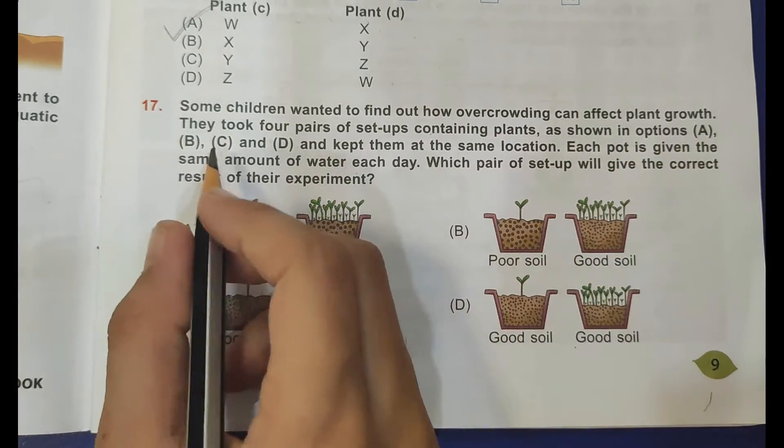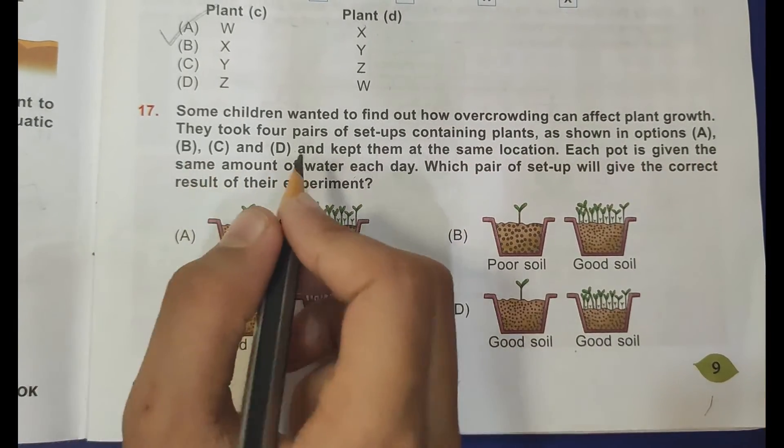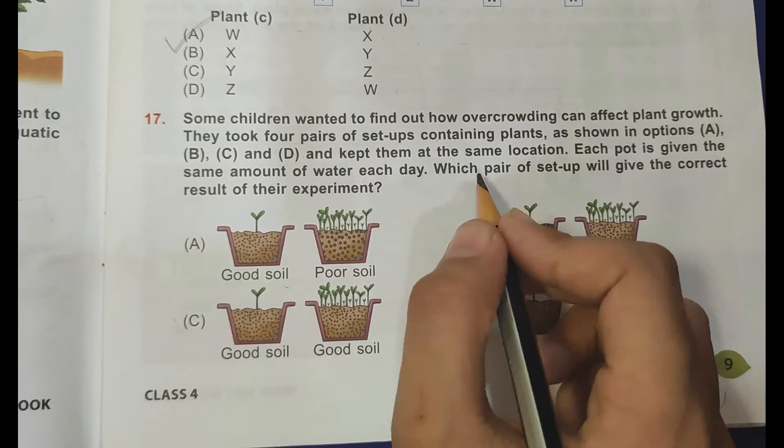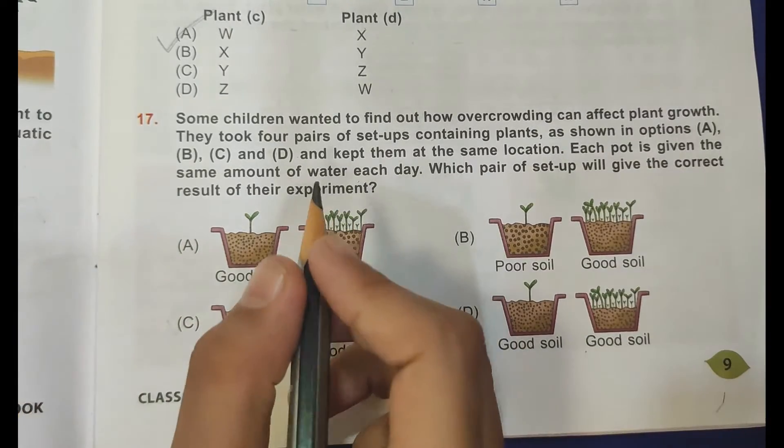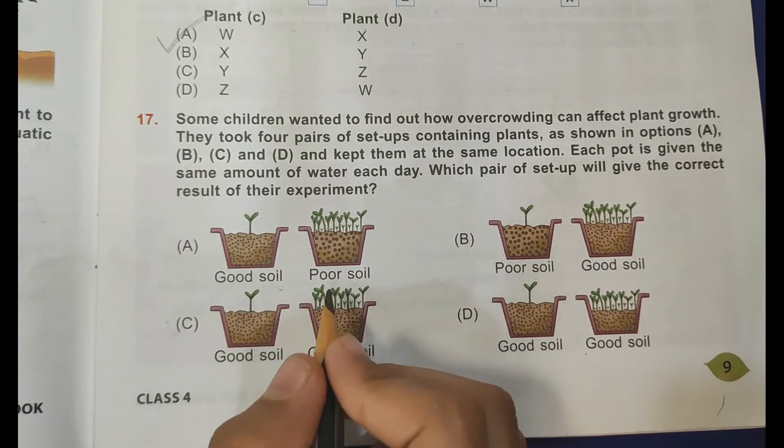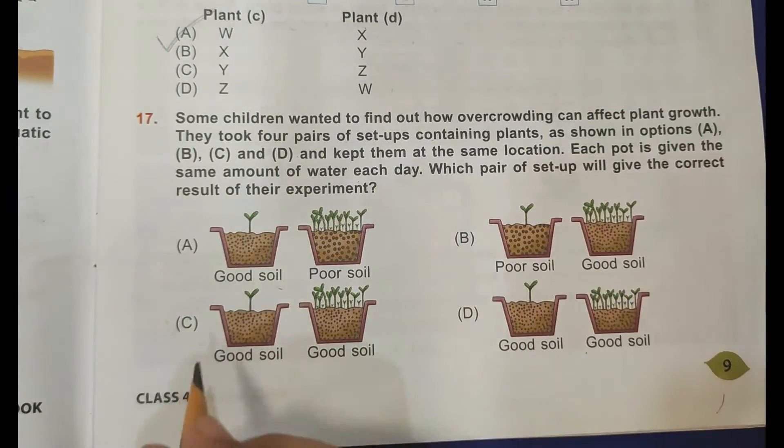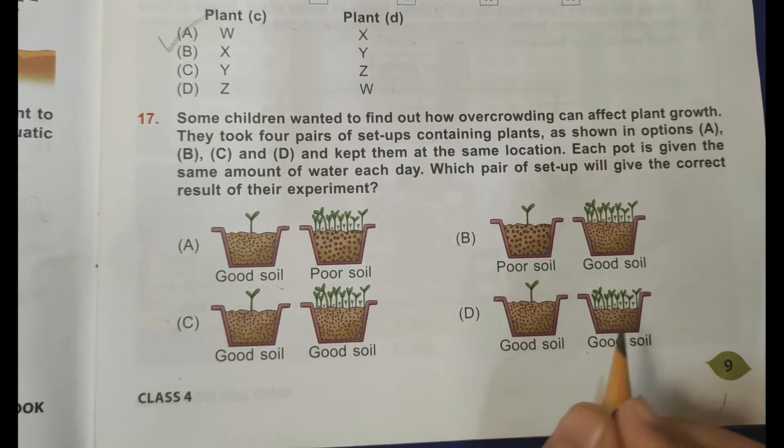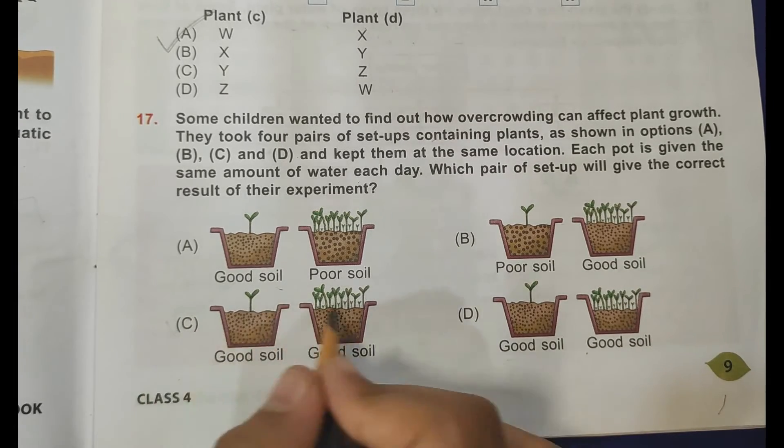Children wanted to find out how overcrowding can affect plant growth. They took four pairs of setups containing plants as shown in options A, B, C, and D and kept them at the same location. Each pot is given the same amount of water each day. Which pair of setup will give the correct result of their experiment? For the correct result of experiment, they need to use both good soils. Here is good soil and here is poor soil, so it is incorrect. Here is poor soil and here is good soil, so that is incorrect. Option C, both are good soils. Option D, they both are good soils but in option D there is less amount of good soil in this pot and here is equal amount of soil. So C is the correct answer.